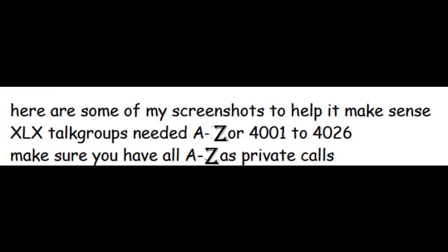Here are some screenshots to help make sense of this. XLX talk groups needed are A through Z, or 4001 to 4026. You have to make sure that all of these — A through Z or 4001 to 4026 — are set as private calls.